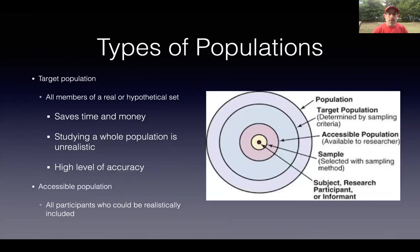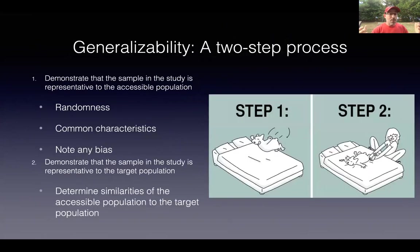So when we're trying to create a study that is generalizable, the first thing we want to think about is who our target population is — who do I want to know about? And then based on that target population, who do I have access to that's a member of that target population? My accessible population should be representative of my target population. When we try and create a study and say that this study is going to be generalizable, we often look at randomness and we often look at the common characteristics of the sample.